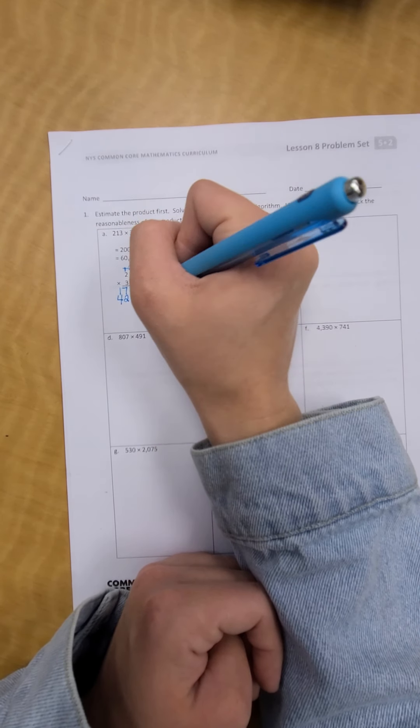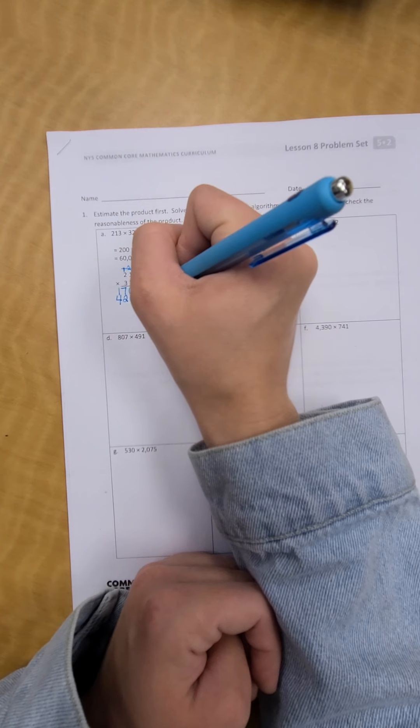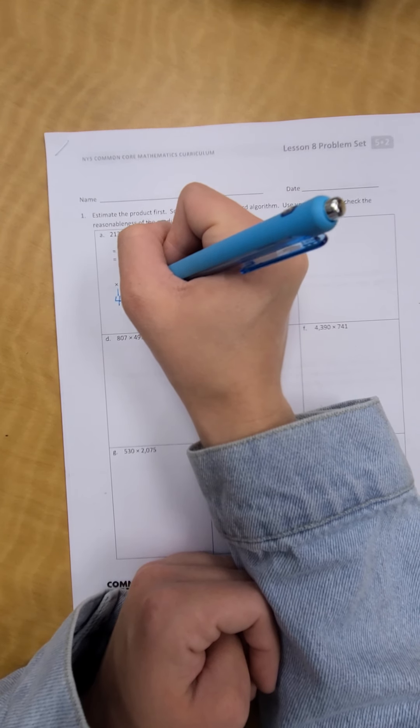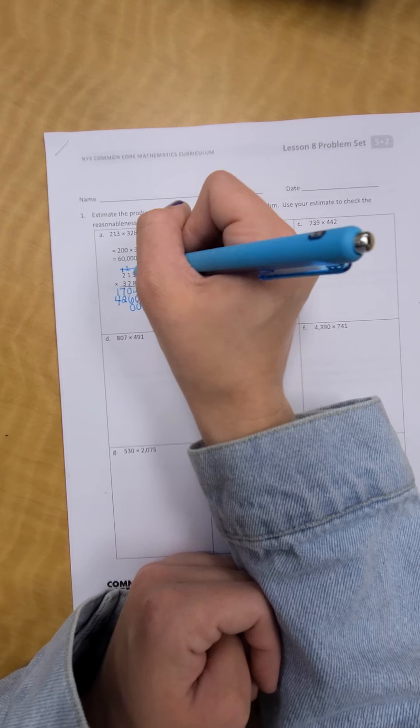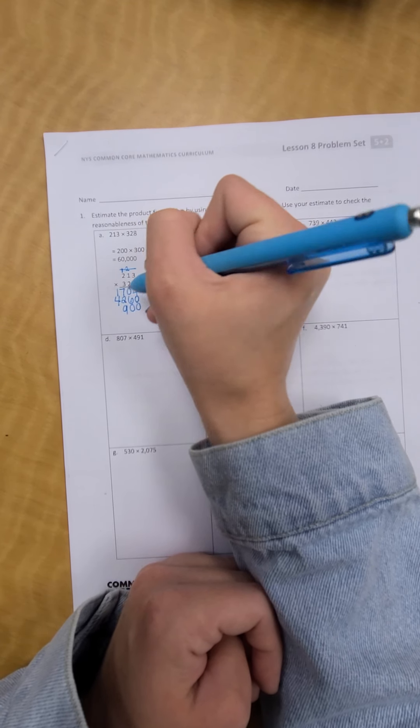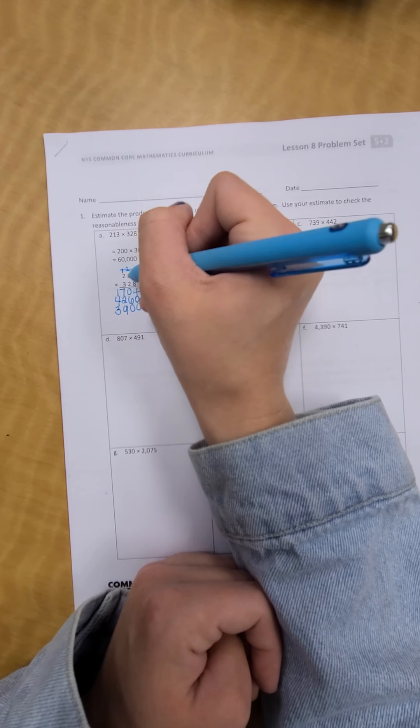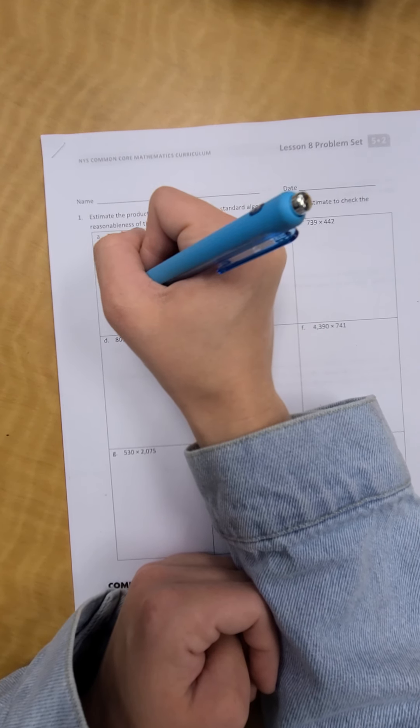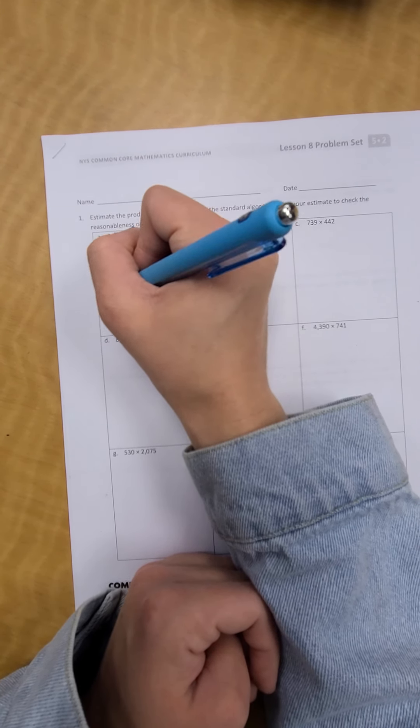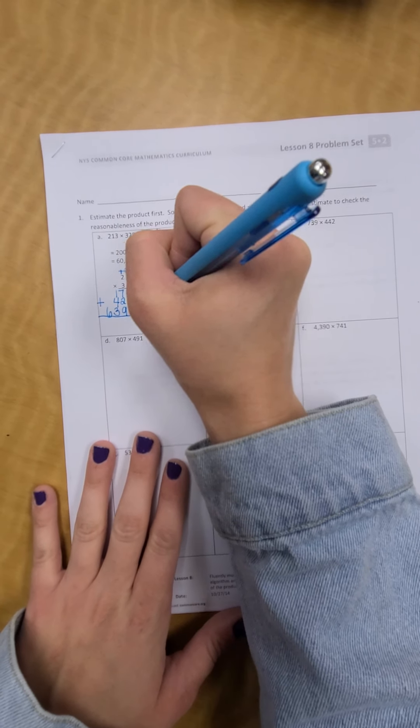And then, I'm going to go to my 100s place. So, I'm going to put a 0. Go to the 100s. 3 times 3 is 9. Put down your 9. 3 times 1 is 3. Put down your 3. 3 times 2 is 6. Put down your 6. And then, we add it up.